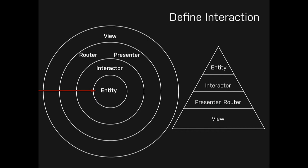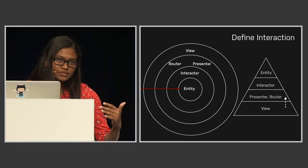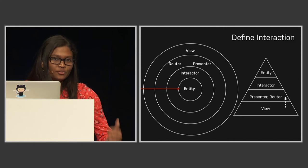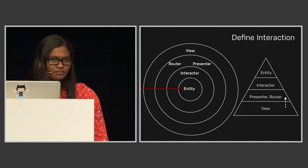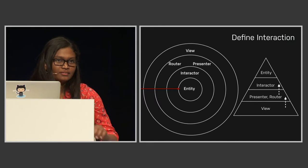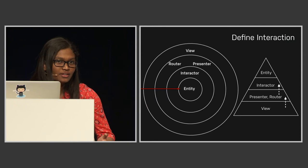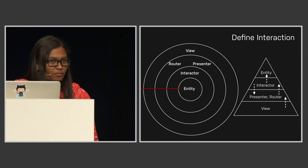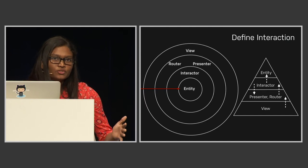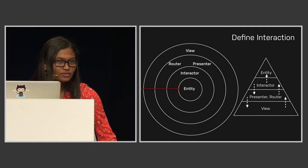Next, we have to define the interaction - how these modules interact with each other, how data passing takes place. We start with View. View receives user events and invokes appropriate methods on the presenter, saying the user has tapped this button. Presenter understands it needs to fetch some data from the interactor. The interactor receives that command, interacts with the entity layer, finds the data, and hands it over to the presenter. Presenter has the data, processes it into a format usable by the View, hands it over to View, and finally View shows the data to the user.